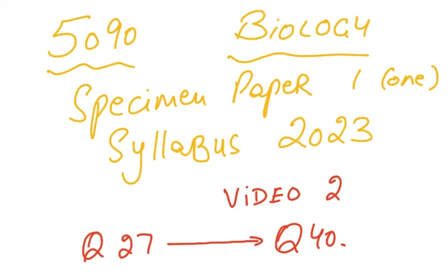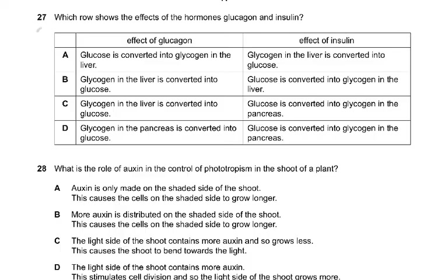Bismillahirrahmanirrahim. This is the second video for the 5090 specimen paper 1, syllabus 2023, covering question 27 to question 40. We start with question 27: which row shows the effects of the hormones glucagon and insulin? We all know that glucagon converts glycogen to glucose.